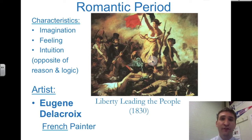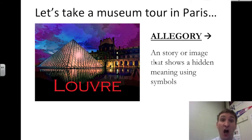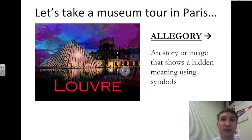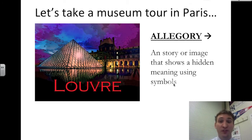Right now we're going to take a virtual trip to a museum in Paris called the Louvre. The Louvre is home to the Mona Lisa, Da Vinci's masterpiece, and also to Lady Liberty Leading the People. You're going to hear the word allegory in this tour. An allegory is a story or image that shows a hidden meaning using symbols. Lady Liberty is an allegory — you're going to learn about that in this tour right now.